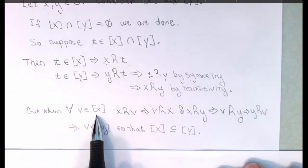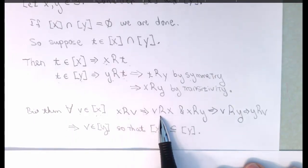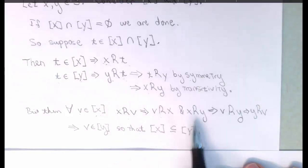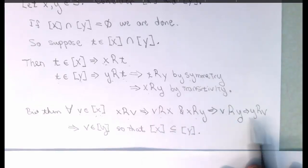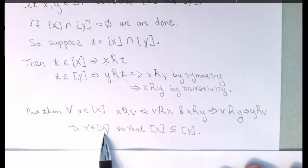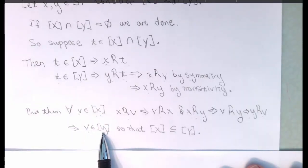Now, let V be anything in the equivalence class of X. Then, by definition of the equivalence class, X is related to V. And therefore, V is related to X by symmetry, and we already justified the fact that X is related to Y, so by transitivity, V is related to Y, and therefore Y to V. But if Y is related to V, then that means that V is in the equivalence class of Y. And so, for every V in the equivalence class of X, V is also in the equivalence class of Y.